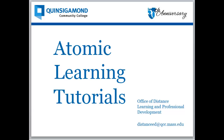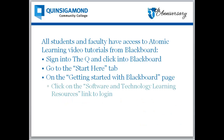To access the video tutorials through Blackboard, all you need to do is sign into the queue, click on the Blackboard image, and go to the Start Here tab. Then on the Getting Started with Blackboard page, find the Atomic Learning Software and Technology Learning Resources link and click on that. So let's go to Blackboard so we can see how to do this.